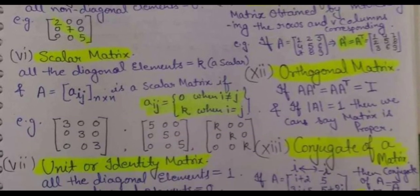Next is orthogonal matrix. An orthogonal matrix is a matrix such that if you take the product of that matrix with its transpose, you get the identity matrix. If taking the product of any given matrix with its transpose gives the identity matrix, that matrix is called an orthogonal matrix. And if the determinant of that matrix is equal to 1, then we can say that matrix is a proper matrix.